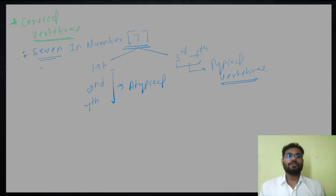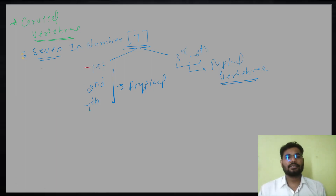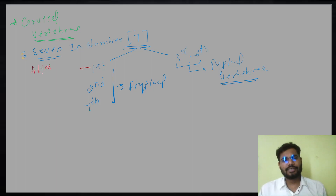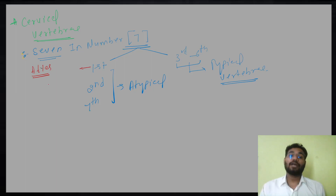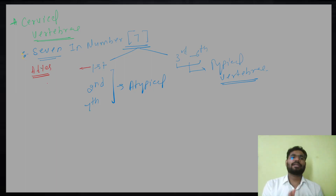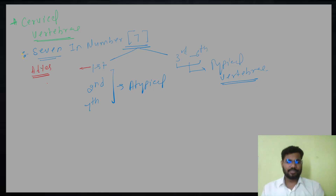About the 1st cervical vertebra, let us start. It is actually called as atlas. Why it is called atlas you will realize just after some time. Before I come to the diagram, let us discuss the structure here.